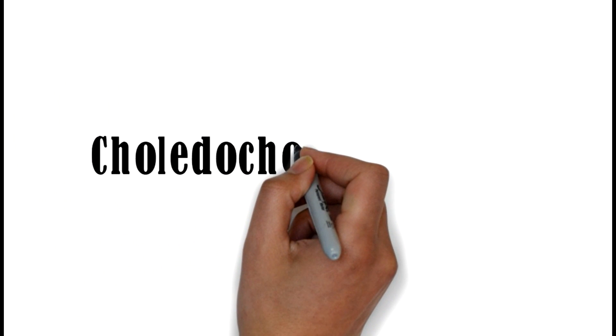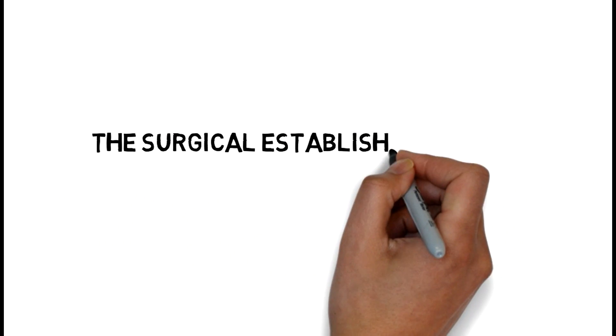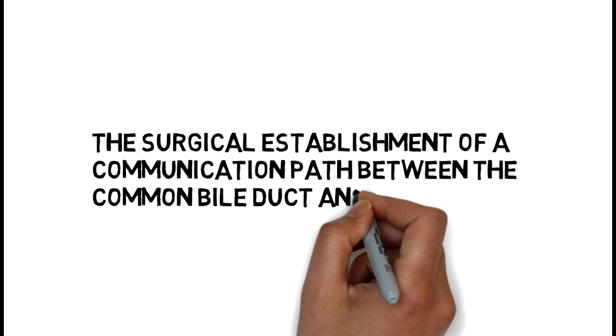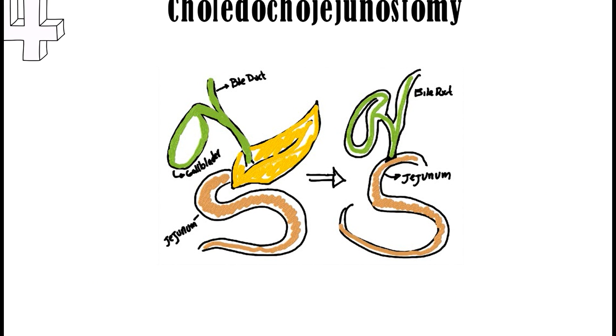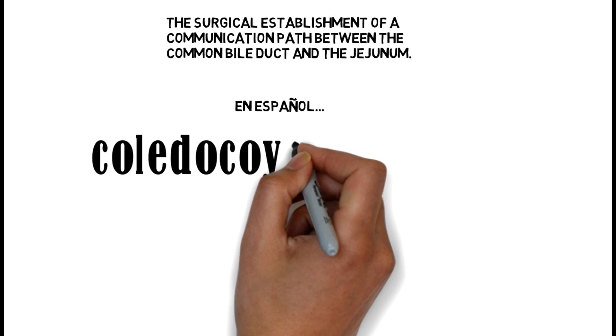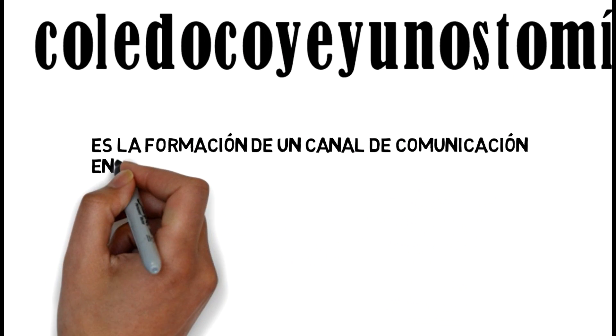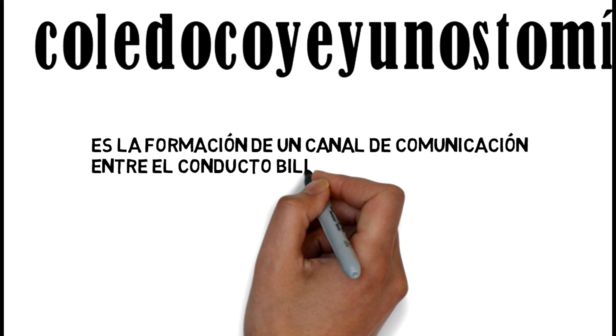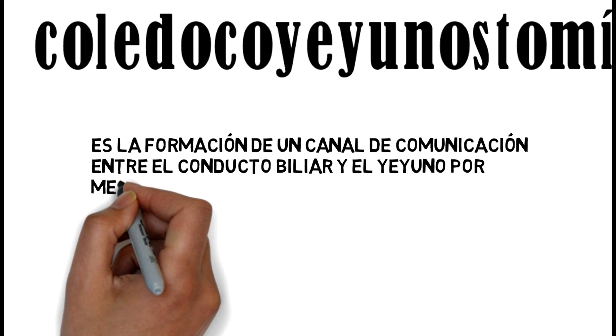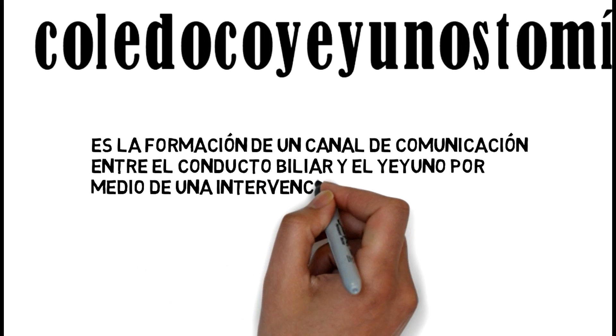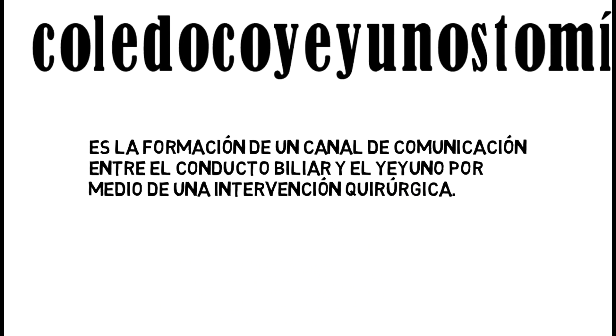4. Choledochojejunostomy — the surgical establishment of a communication path between the common bile duct and the jejunum. En español, colodocoyeyunostomía es la formación de un canal de comunicación entre el conducto biliar y el jejuno por medio de una intervención quirúrgica.